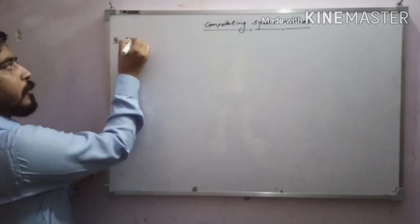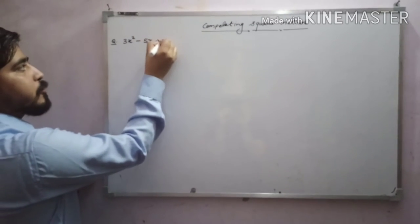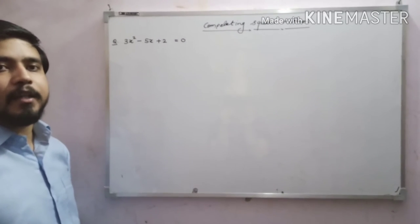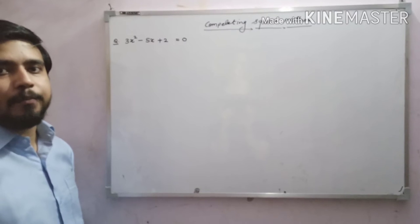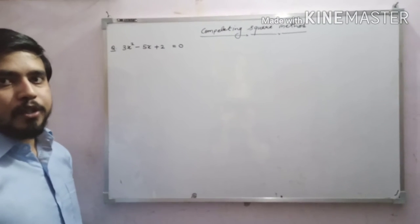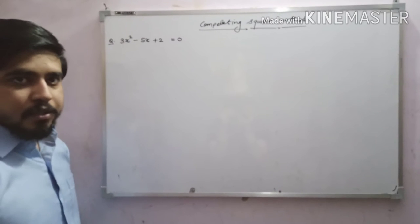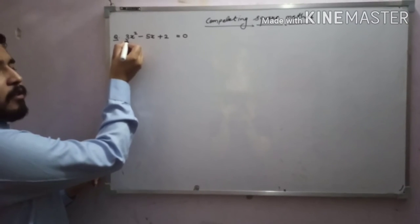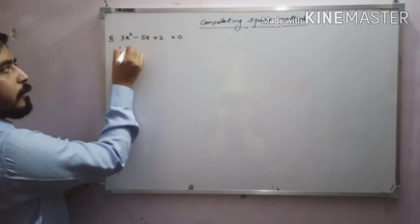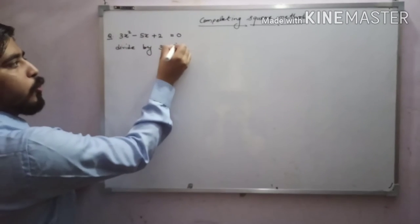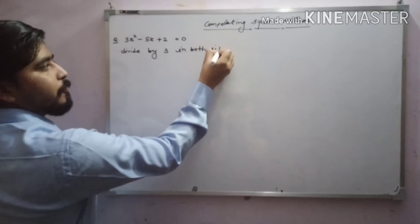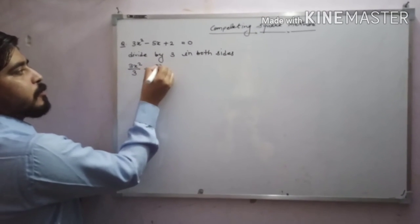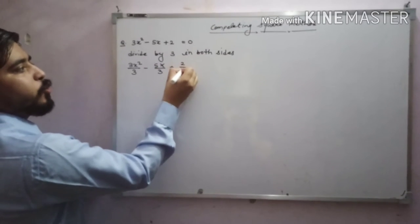In this example: 3x² − 5x + 2 = 0. We will apply the completing the square method to find the zeros of this quadratic polynomial, step by step. First step: make the coefficient of x² equal to 1, so divide by 3 on both sides: 3x²/3 − 5x/3 + 2/3 = 0.